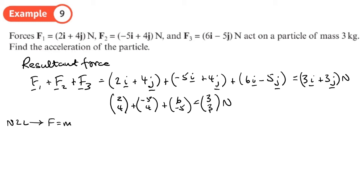So using Newton's second law which is going to be F equals ma, the resultant force as a column is 3, 3 equals the mass, which is 3, times by the acceleration.